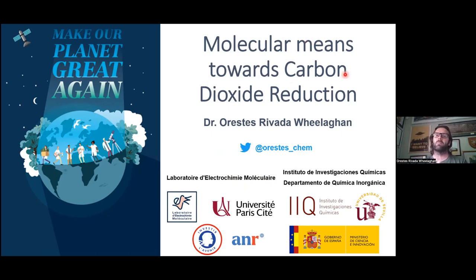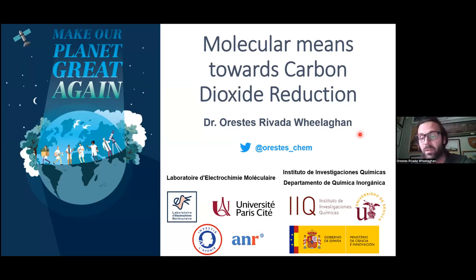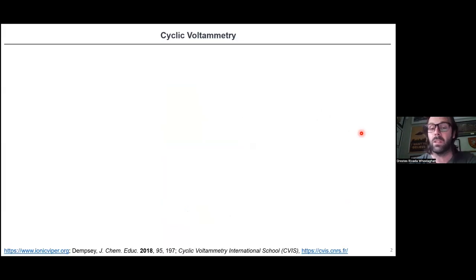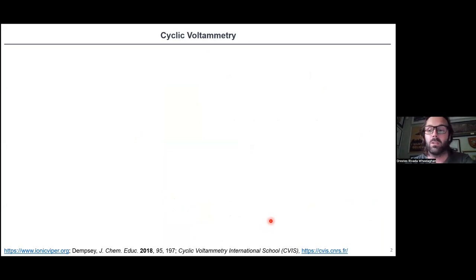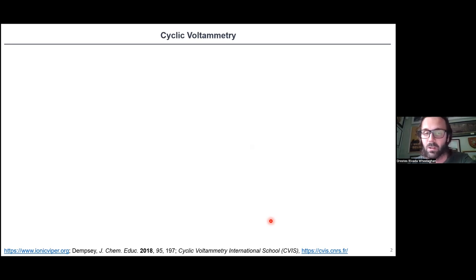I will talk today about molecular means towards carbon dioxide reduction. Because this might be a bit too chemistry-focused for the variety of audience we have, I'm going to explain the basics of each technique and go slow in some explanations throughout the talk. Cyclic voltammetry is an electrochemical technique we use to analyze the electrochemical properties of our molecular complexes in solution, and also what we normally use when we start to understand some electrocatalytic process in our organic solutions.